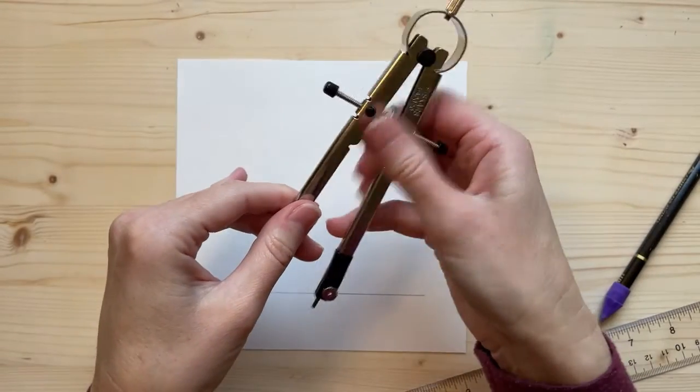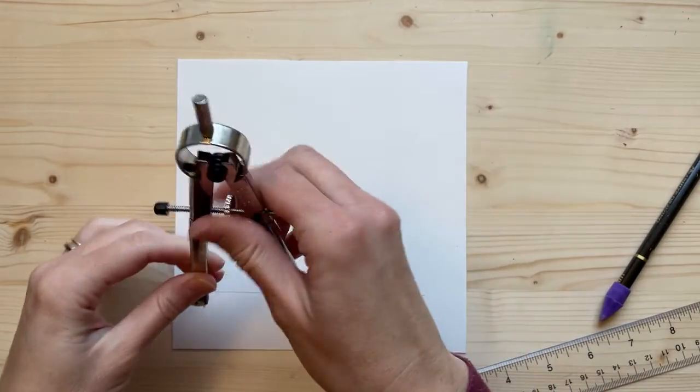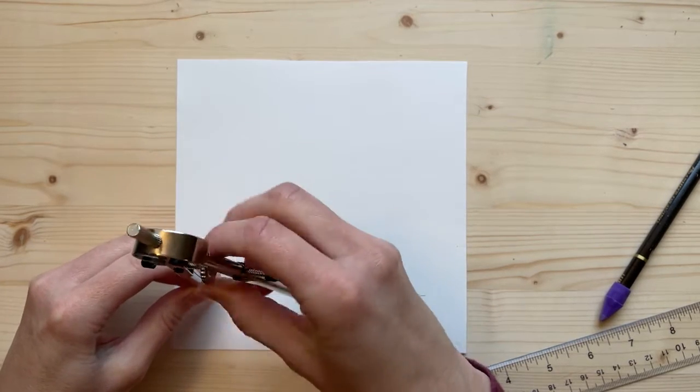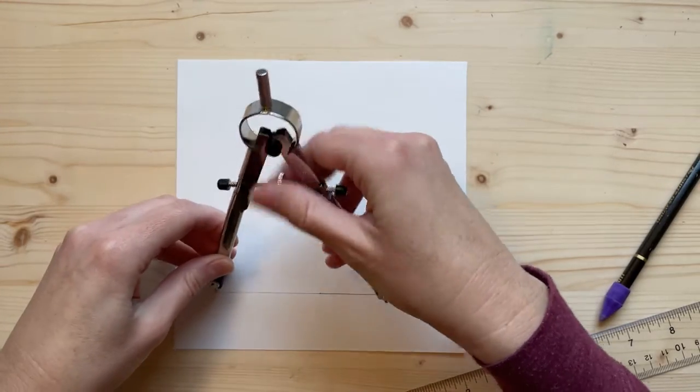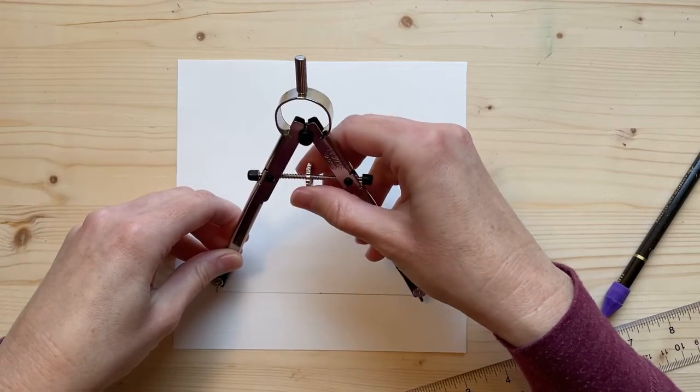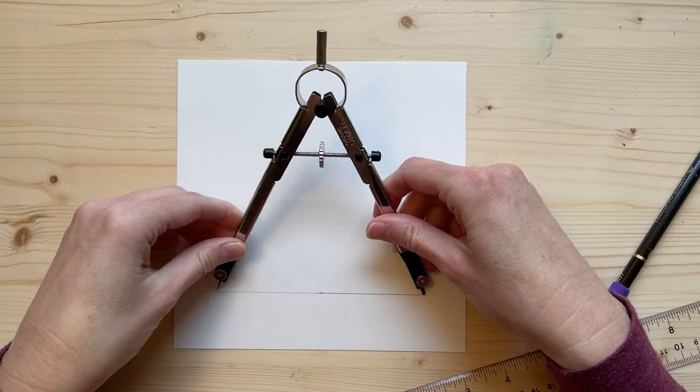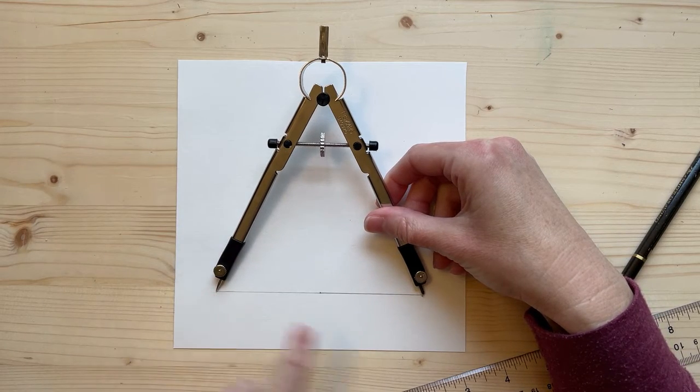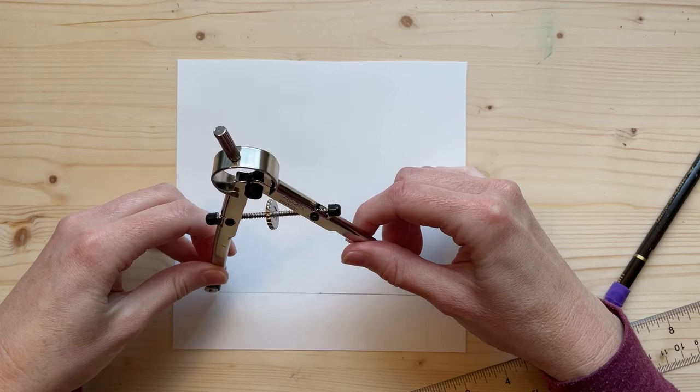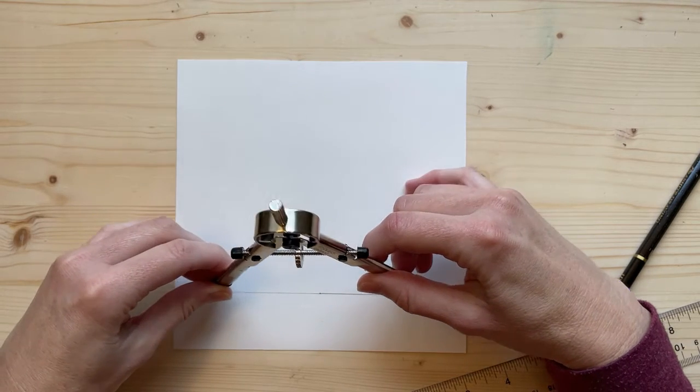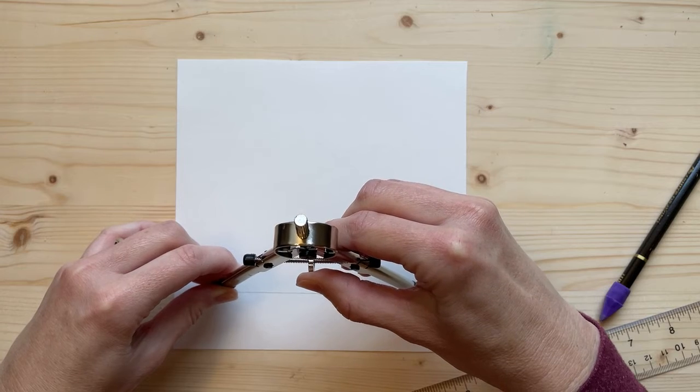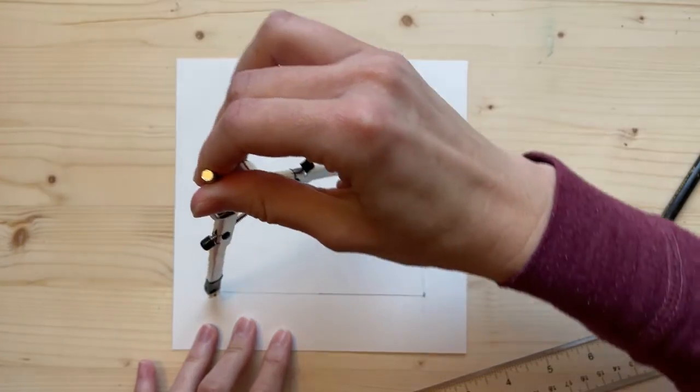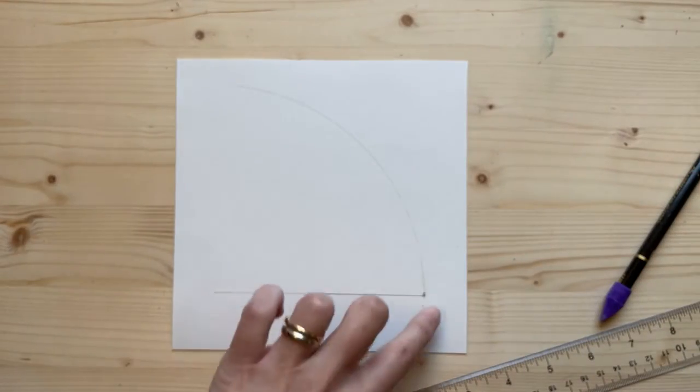So you're going to open up your compass all the way to the 5, to the end of the line. So see my line fits in between the point of my compass and the pencil lead. I'm going to put that down, the point in the end of that line, put my pencil on the other edge, and I am going to make a line. So now I have this big arch.